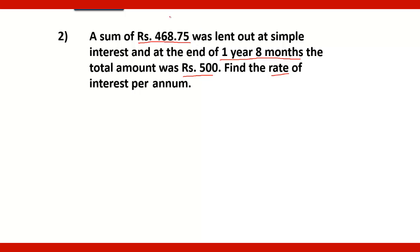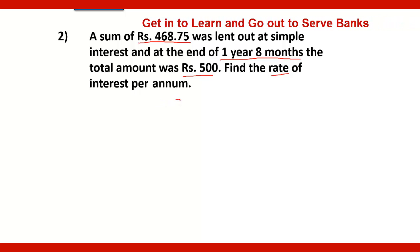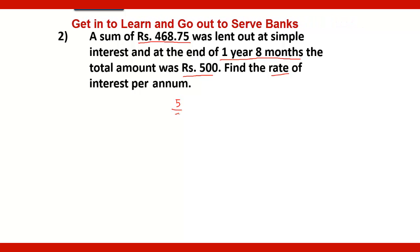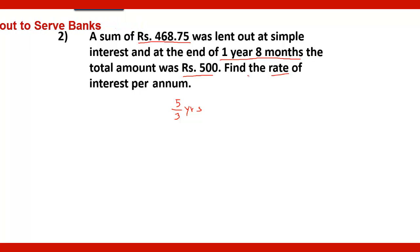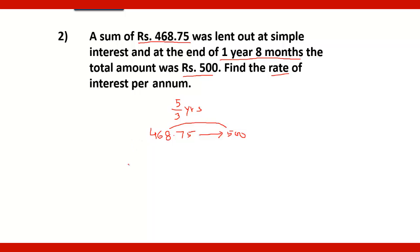A sum of Rs.468.75 is lent out at simple interest. At the end of 1 year 8 months — which converts to 5/3 years — the total amount is Rs.500. The difference between 500 and 468.75 is Rs.31.25. So the simple interest received is Rs.31.25.